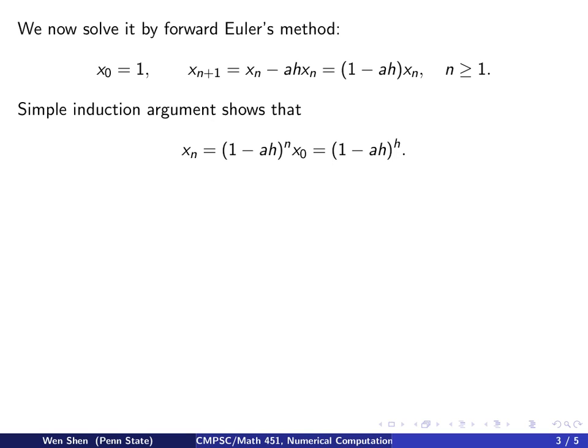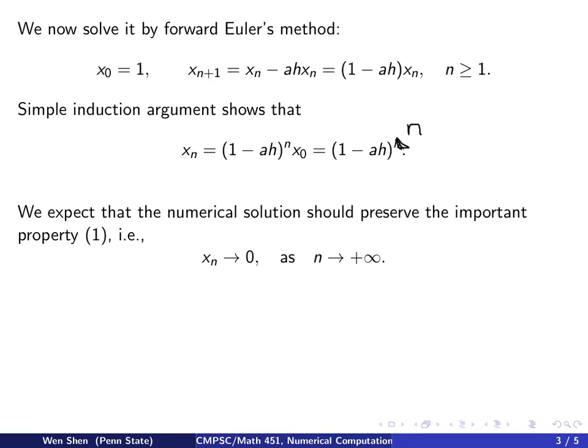We expect that the numerical solution should preserve the important property, i.e., x_n → 0 as n → +∞.